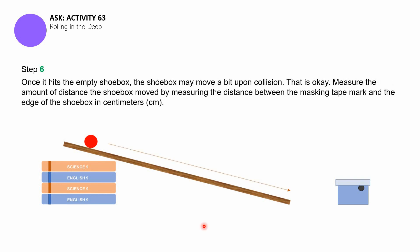And then step number six, once it hits the shoe box, the shoe box may move a bit upon collision. You have to measure the amount of distance the shoe box moved by measuring the distance between the masking tape mark and the edge of the shoe box, the final position of the shoe box in centimeters. In other words, you have to calculate how far, how big is the distance between the final position of the shoe box and the original position of the shoe box in centimeters.